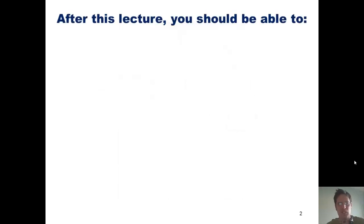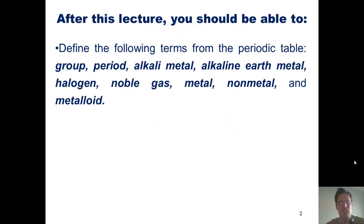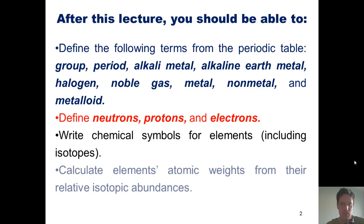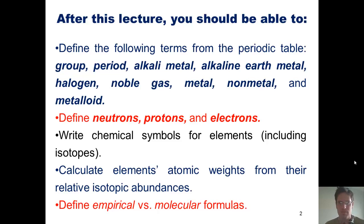After today's lecture, you should be able to define the following terms from the periodic table, define neutrons, protons, and electrons, write chemical symbols for elements including isotopes, calculate elements' atomic weights from their relative isotopic abundances, and define empirical versus molecular formulas. Are you ready?